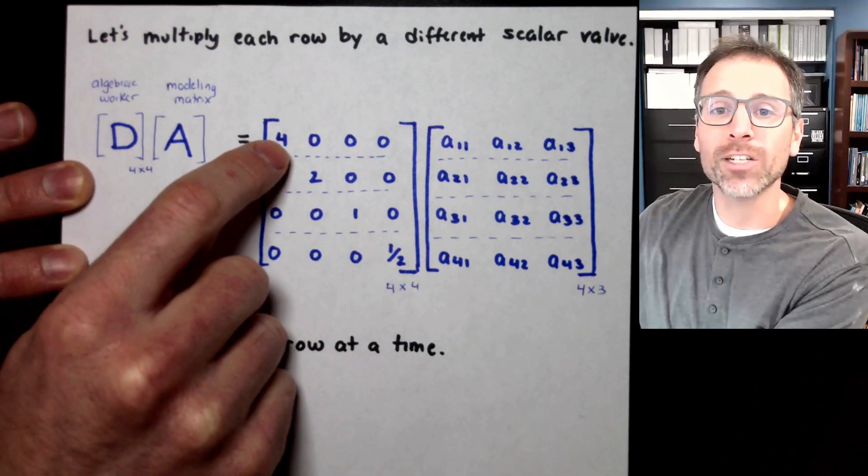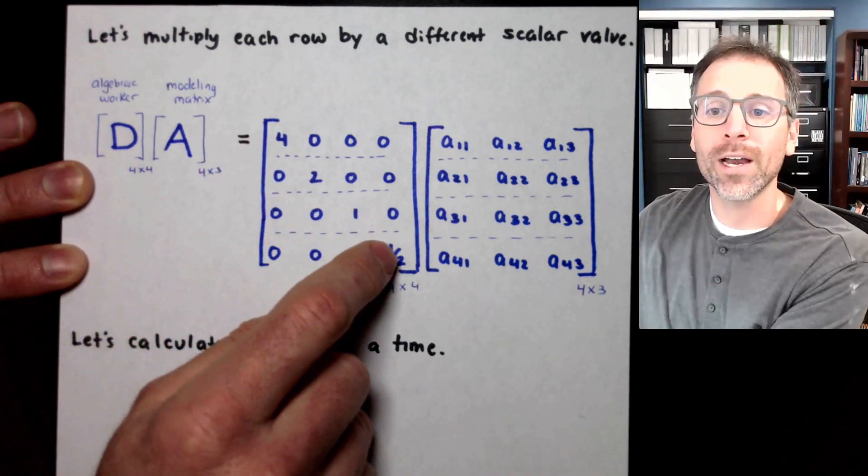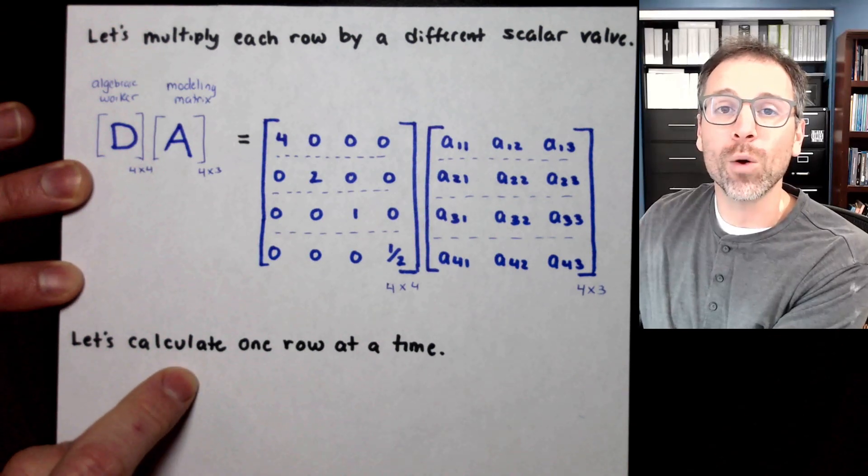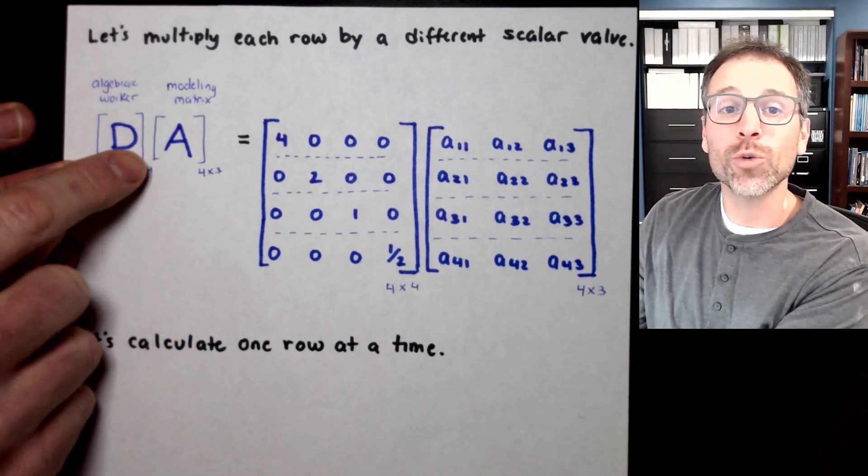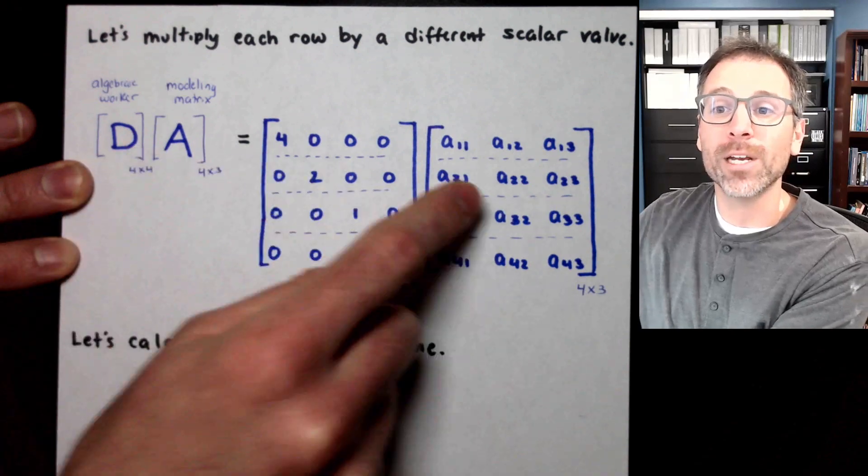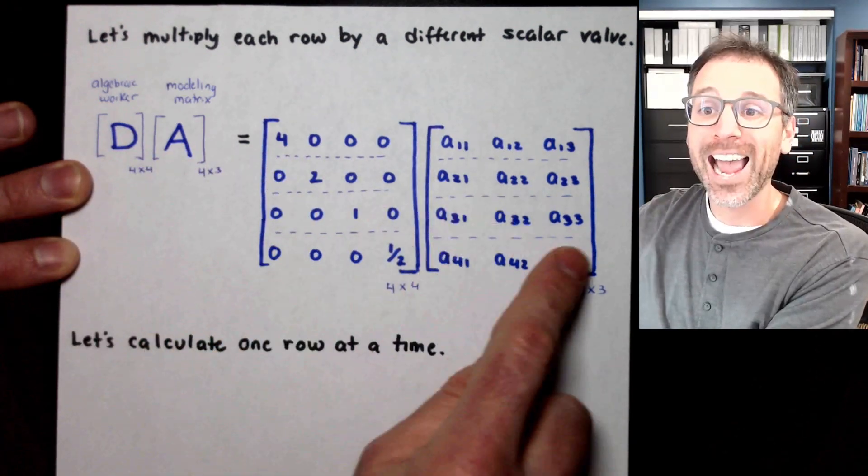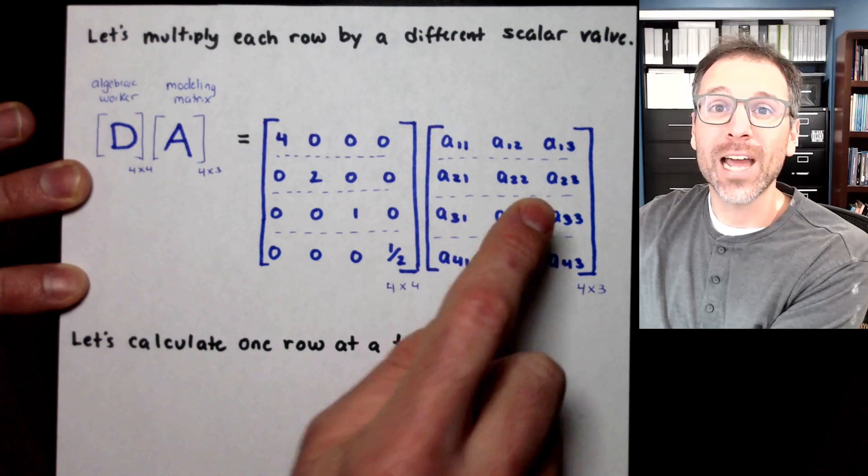Specifically, let's use the 4 by 4 diagonal matrix where we have 4, 2, 1, and 1 half along the diagonal entries, and we'll calculate one row at a time. In this case, since we're doing left multiplication and we want to manipulate the rows, we'll chop the left matrix into rows, here's my algebraic worker, and we'll chop the right matrix into rows, and then we'll see what happens.